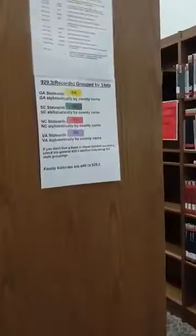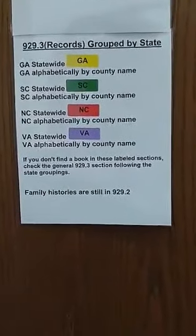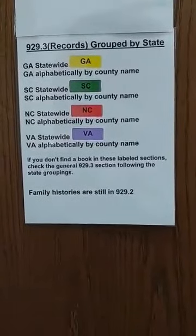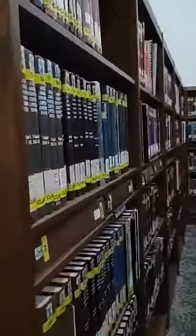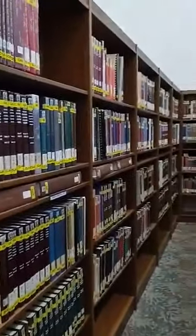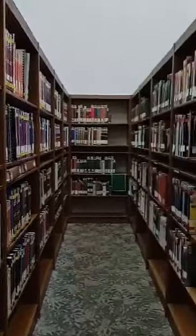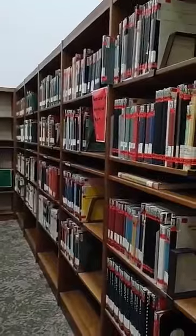We do this for four different states: Georgia, South Carolina, North Carolina, and Virginia. As you can see, we have these all color coded for you to make them easier to find.